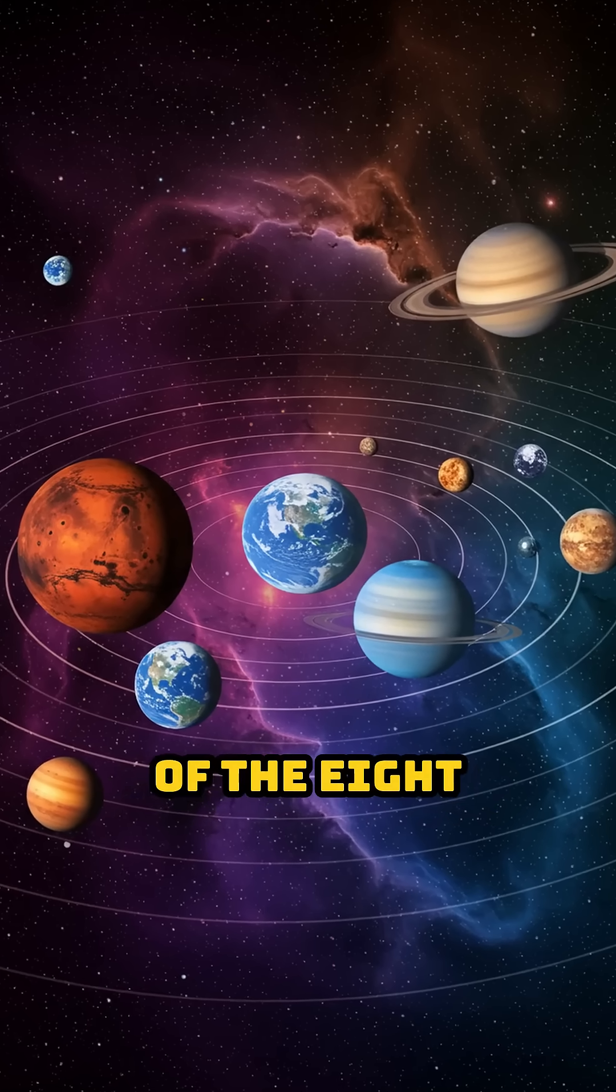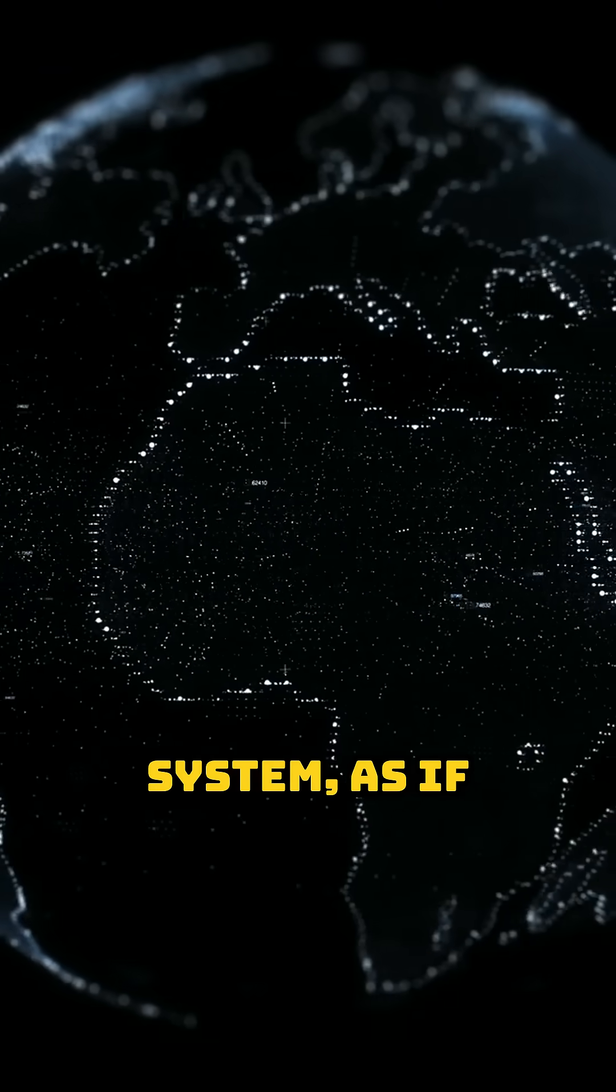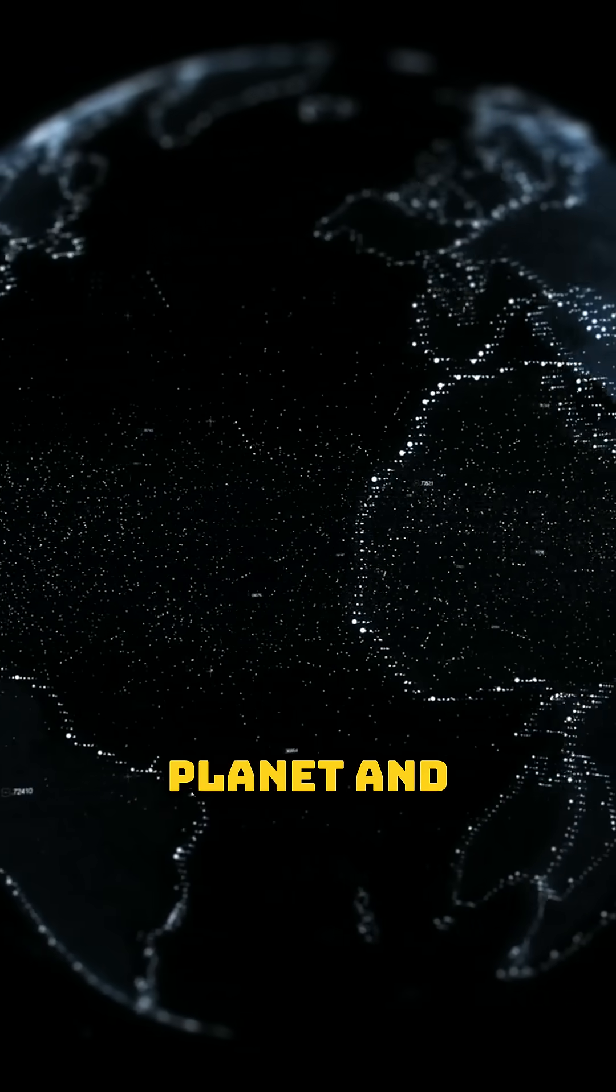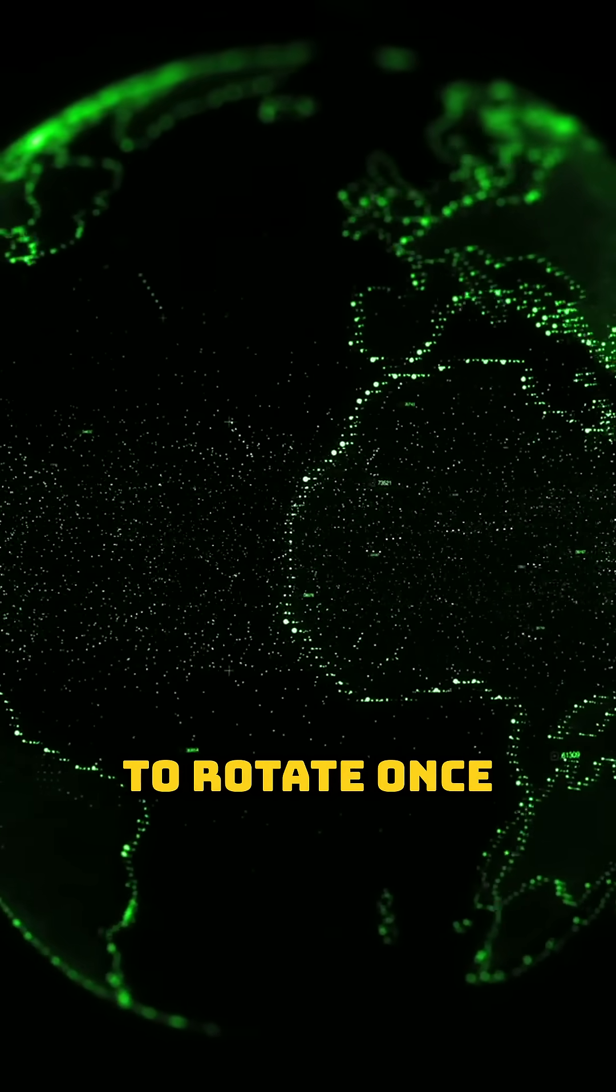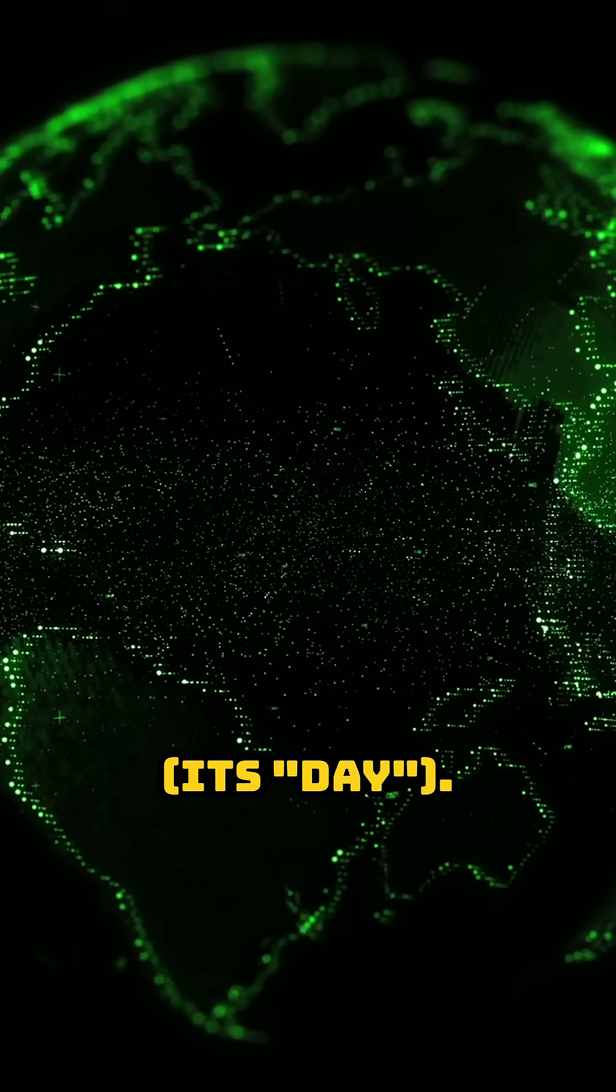Here's the current local time on each of the eight planets in our solar system. As if you were standing on each planet and measuring time by how long it takes that planet to rotate once on its axis, its day.